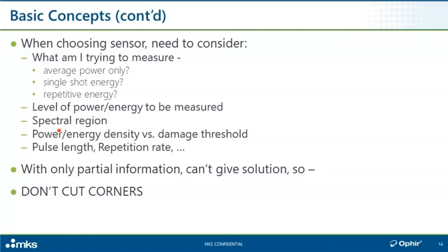What kind of power density or energy density is my sensor going to be exposed to? Can I control that? Even if my application involves focusing a beam to drill holes in aluminum or cut silicon wafers, do I need to place my sensor in the focal plane? Usually I don't. If I'm involved with a pulsed beam, what's the pulse length and repetition rate? All of these things affect my choice of sensor. If I cut corners and only consider partial information, I shouldn't be surprised if I choose a sensor that ends up not working or getting damaged.